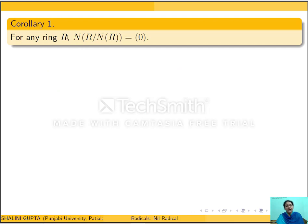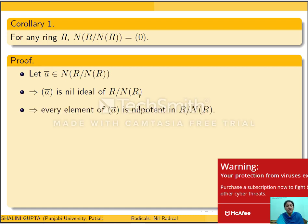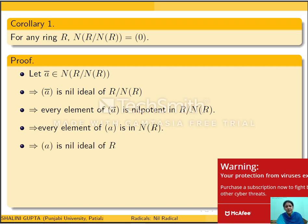As an easy corollary, for any ring R the nil radical of R/n(R) is just the zero ideal. Since n(R) is a two-sided ideal of R, the quotient makes sense. If ā belongs to the nil radical of R/n(R), then the two-sided ideal generated by ā is a nil ideal of R/n(R), meaning every element of the ideal of a is in n(R). This means the two-sided ideal generated by a is a nil ideal of R, so a ∈ n(R), giving ā = 0̄. Thus nil radical of R/n(R) is the zero ideal.